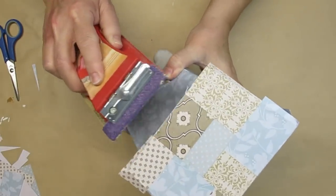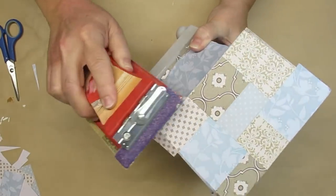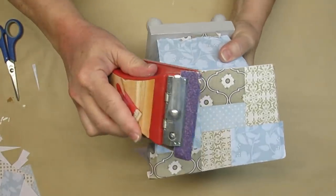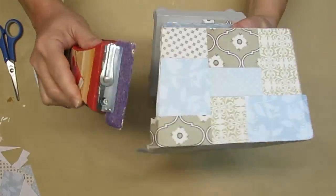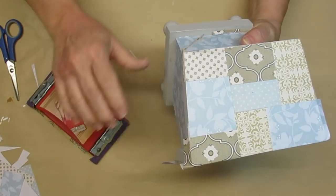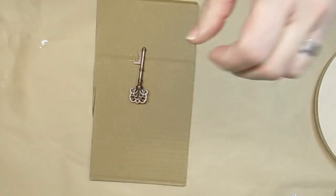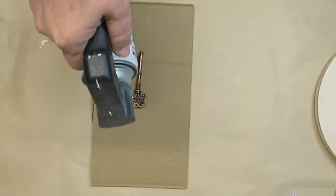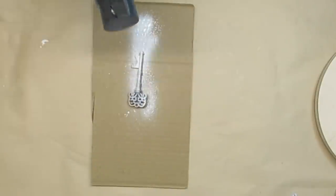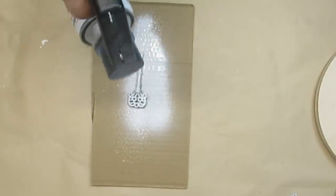Using the sanding block and a downward motion I'm just going to get off all of the excess paper and that will leave it with a nice clean edge but also a little bit of a rustic edge. This is a key that I had in my stash but it's not the right color so I'm just giving it a quick coat of white spray paint.